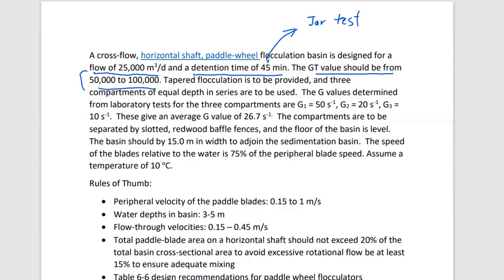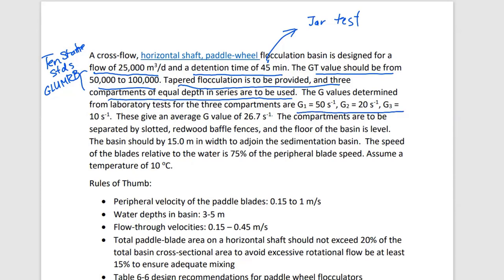The criteria here would come from the 10-state standards, also referred to as the GLUM standards — Great Lakes Upper Mississippi River Basin. They are a group of 10 states that have established design criteria for water treatment plants. We will use tapered flocculation with three compartments of equal depth. From the jar test, we determined that the G value in the first compartment is 50 inverse seconds, the second is 20, and the third is 10, giving an average of 26.7.